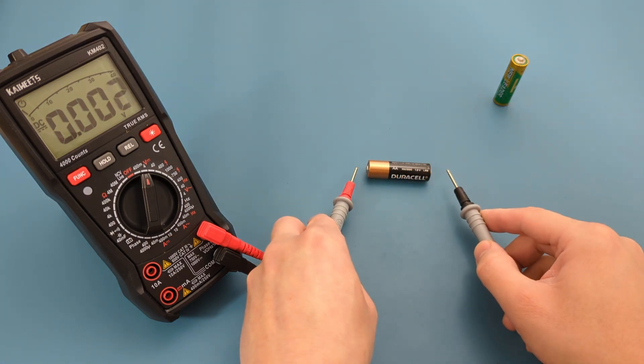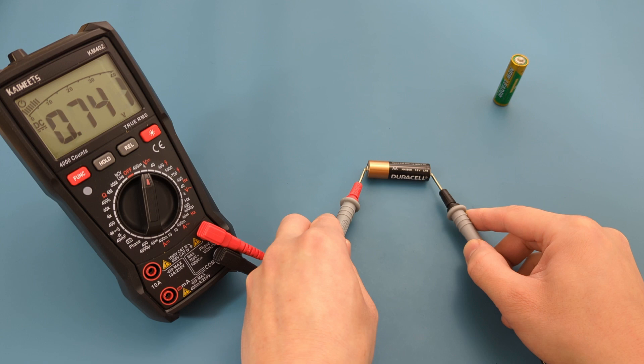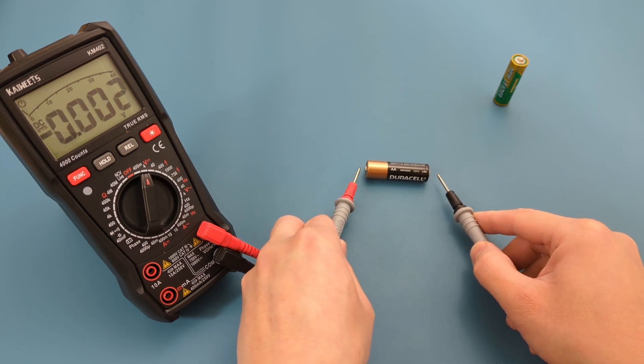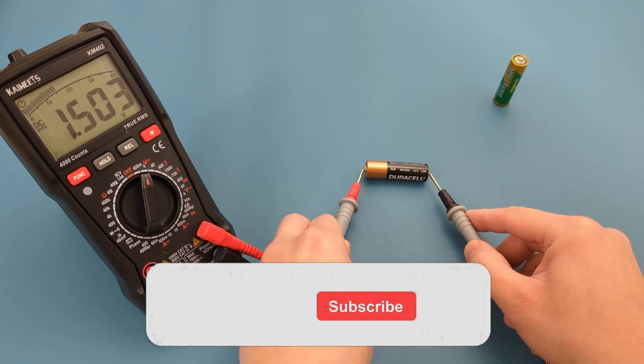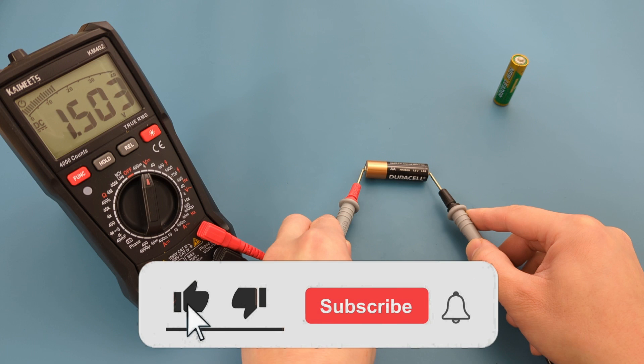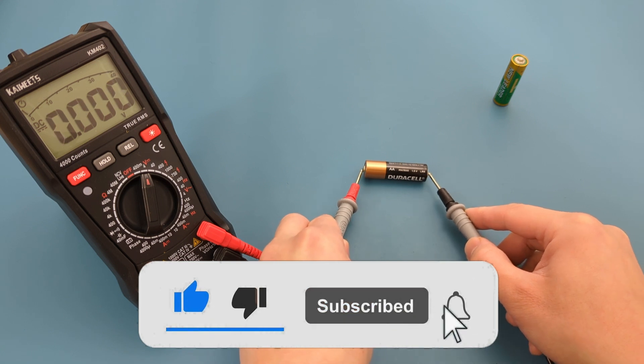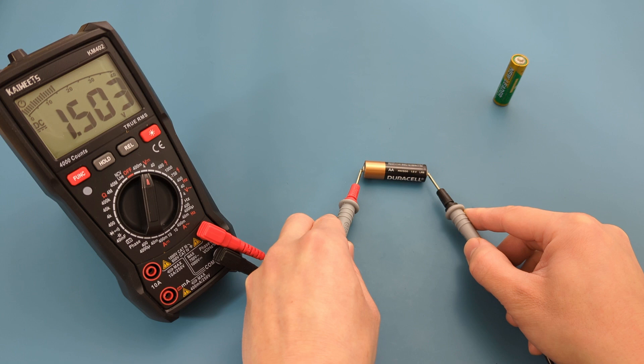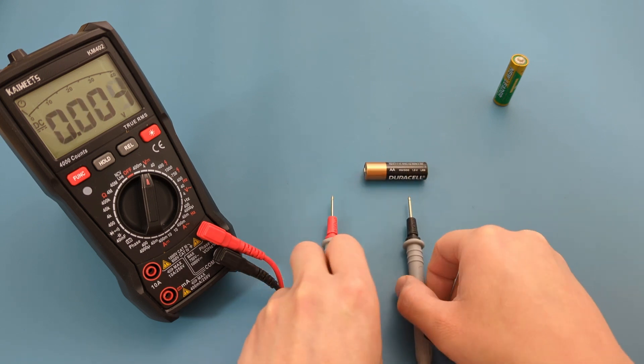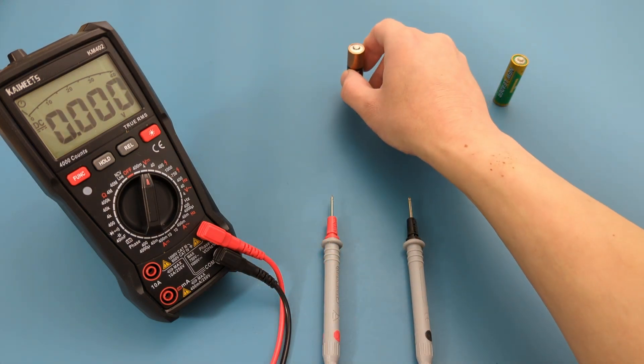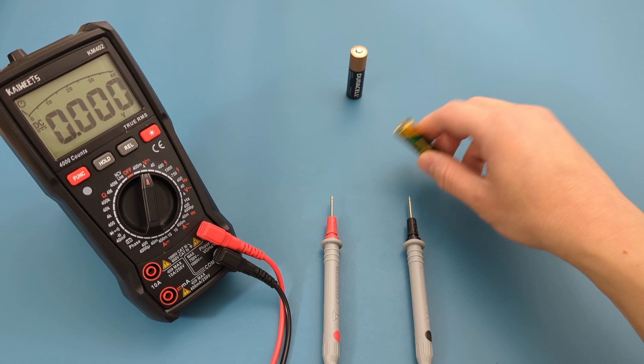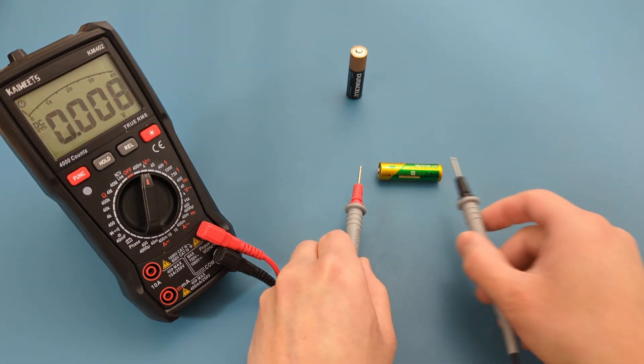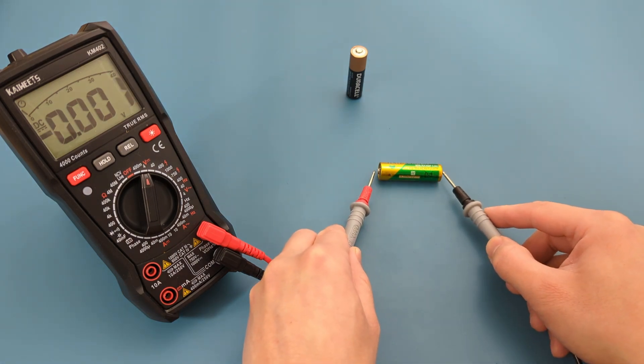Touch the red probe lead on the battery's positive terminal and the black probe lead on the negative terminal. We're measuring 1.5 volts. As expected, this is a good battery. On the other battery, we're only getting about 0.3 volts. We've confirmed this battery is bad.